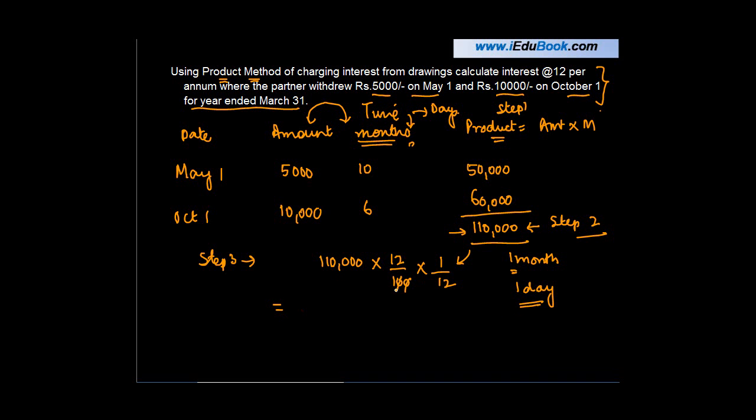Now if we knock this off, these two go off here. 12, 12, 1, 1, 100. So my interest on this amount is 1,100.